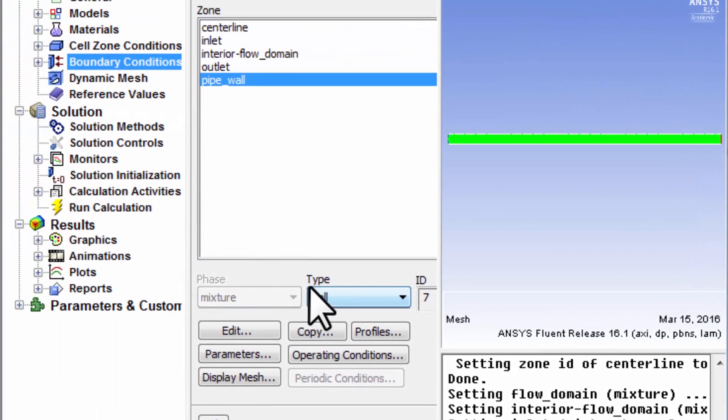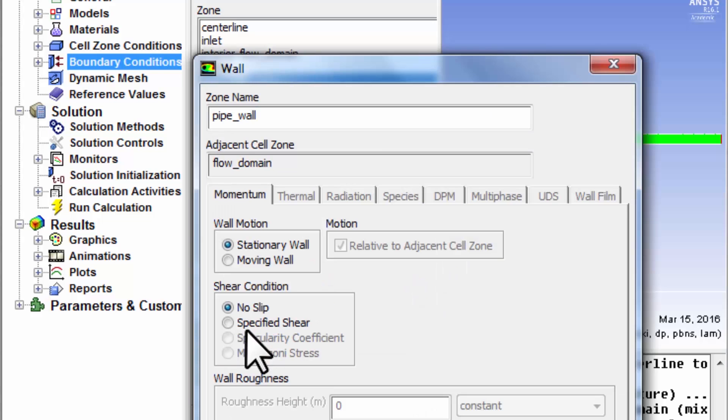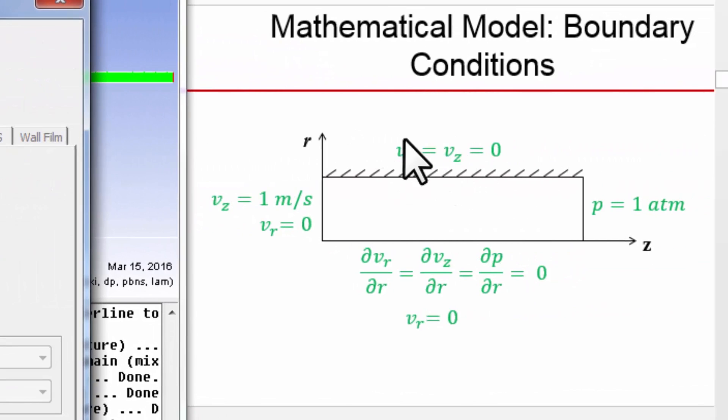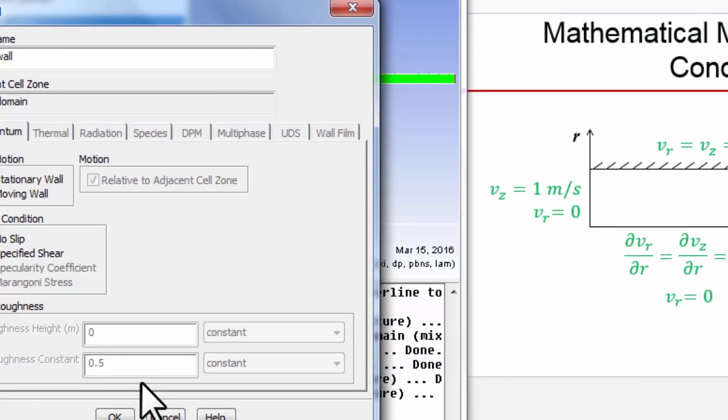Let's set the boundary condition at pipe wall. The type is set to wall, which is right. If I go in here and edit, you see it's set to no-slip. Under the hood it's going to set both components of the velocity to be zero at that boundary. The default gives us that so I don't need to do anything.